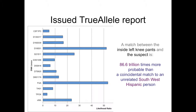In the issued TrueAllele report, we are not looking at just one locus — VWA in this case. Here are all the different loci and their match statistics; the longer the bar, the higher the likelihood ratio. Because these loci are independent, multiplying these numbers together gives the joint match statistic. This lets us state in the report that a match between the inside left knee pants and the suspect is 86.6 trillion times more probable than a coincidental match to an unrelated Hispanic person. The number 86 trillion has about 13 zeros, and from our validation studies, this indicates a very definite match — once the statistic is much beyond a hundred or a thousand, it is a very definite match.